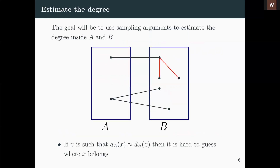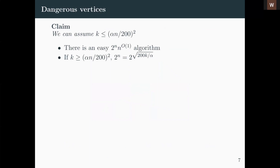The goal will be to use a sampling argument — very similar to the one developed for PTASes — to estimate the degree inside A and B. We will be estimating this degree up to some constant fraction. One problem is that if vertex x has roughly equal degree in both A and B (close to half the total degree), it will be hard to guess which side it belongs to. The key insight is: if x sees roughly half its degree inside both sides, then x is adjacent to many edges of the solution S, and we can bound the number of such 'bad' vertices.